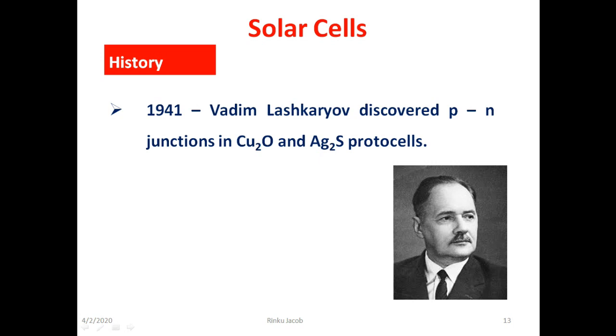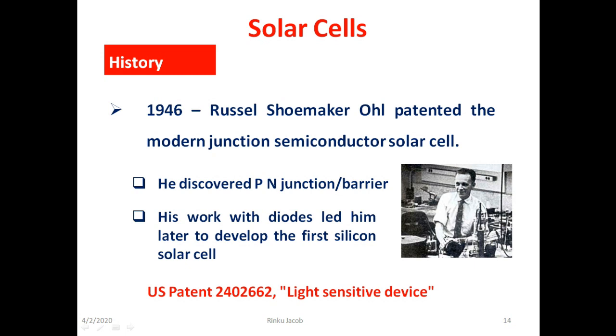In 1941 Vadim Lashkaryov discovered PN junctions in solar cells made of cuprous oxide and silver sulphide. In 1946 an American engineer Russell Shoemaker who is generally recognized for patenting the modern solar cell. In 1939 he discovered the PN barrier which later came to be known as the PN junction. His work with diodes led him later to develop the first silicon solar cells.